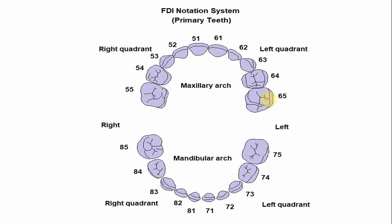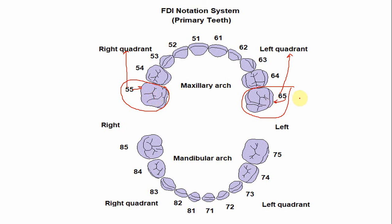In the FDI notation system, the number is 55 for the right maxillary second molar — the first 5 indicates the right maxillary quadrant and the second 5 indicates the tooth number. For the left side, the number is 65 — the 6 indicates the maxillary left quadrant and 5 indicates the tooth number.